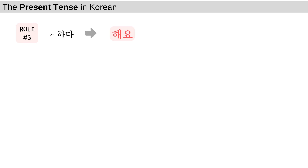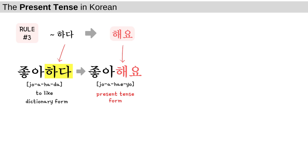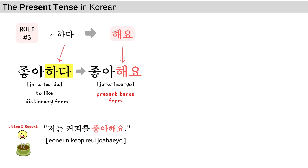Rule number 3: if a verb or an adjective ends with 하다, change 하다 into 해요. Let's take the word 좋아하다. 좋아하다 is a verb which means to like. As you can see, 좋아하다 ends with 하다, so all you have to do is change 하다 into 해요: 좋아해요. Let's take a look at the sample sentence: 저는 커피를 좋아해요 — I like coffee.